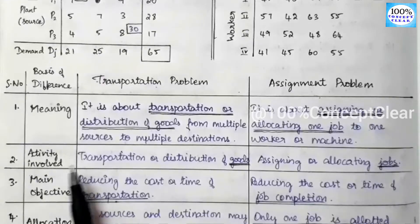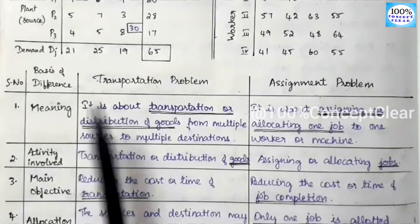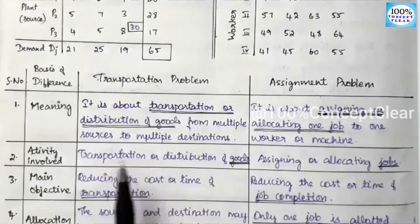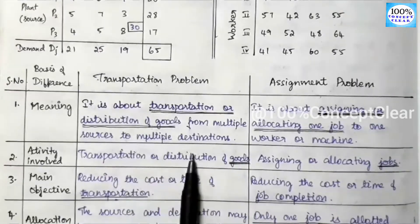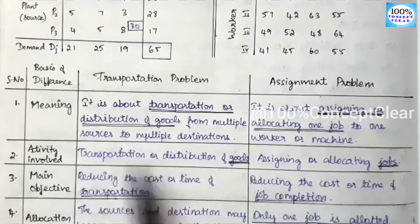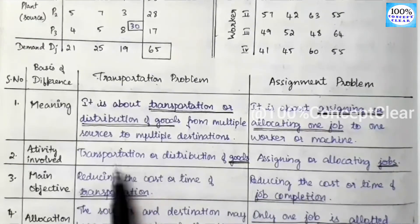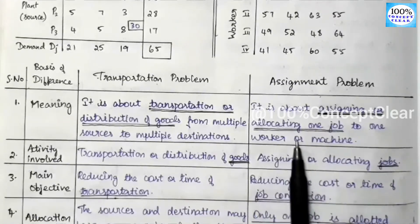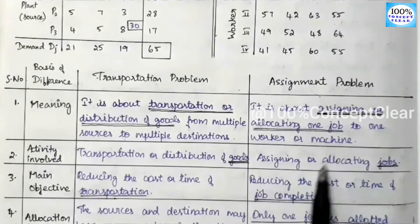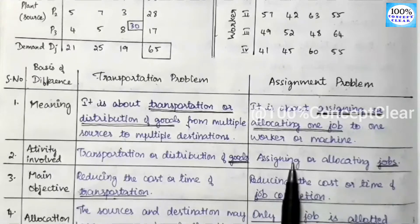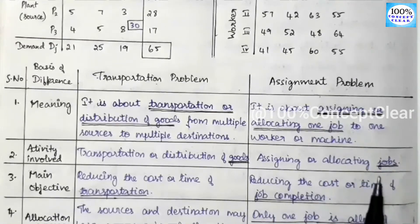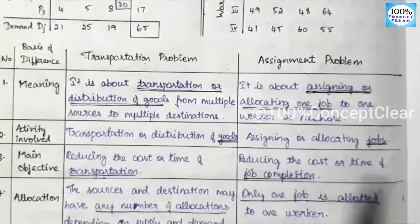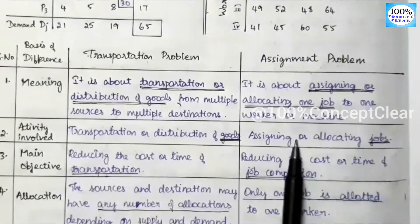Next is the activity involved. In the transportation problem, the activity is the transportation or distribution of goods — we transport or distribute goods. In the assignment problem, the activity is assigning or allocating jobs to workers.